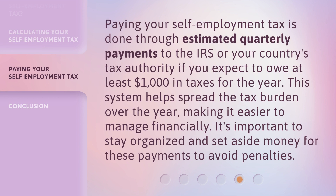Paying your self-employment tax is done through estimated quarterly payments to the IRS, or your country's tax authority, if you expect to owe at least $1,000 in taxes for the year. This system helps spread the tax burden over the year, making it easier to manage financially. It's important to stay organized and set aside money for these payments to avoid penalties.